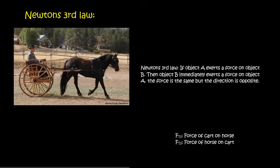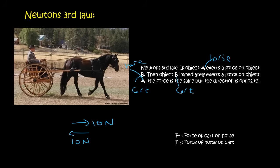Remember what Newton's third law says? If object A, such as a horse, exerts a force on object B, the cart, then object B immediately exerts a force on object A. The force is the same, but the direction is opposite. If the horse exerts 10 Newtons on the cart, the cart exerts 10 Newtons on the horse. If the horse speeds up and increases its force on the cart, the cart's force becomes larger as well.